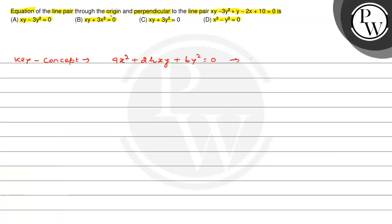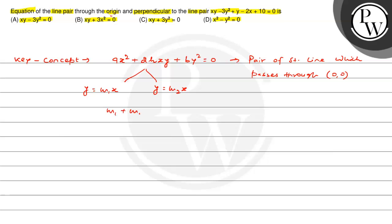तो हमारे pair of straight lines which passes through origin, जिसके equations होंगे y = m1x and y = m2x. जहाँ m1 और m2 का relation है: m1 + m2 = minus 2h by b, and m1 into m2 = a by b. यानि ax square + 2hxy + by square = 0, जो है यह दो lines को represent करेगा y = m1x और y = m2x।